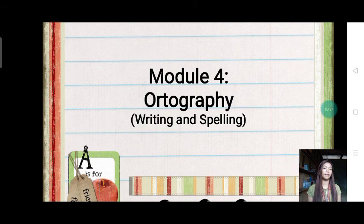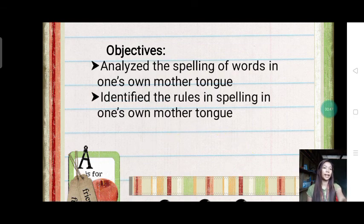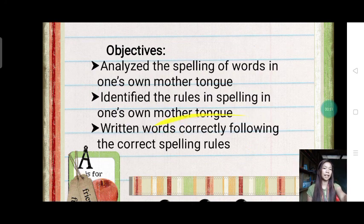Now I have here the objectives and learning outcomes. First is analyze the spelling of words in one's own mother tongue. Identify the rules in spelling in one's own mother tongue. And the last is write words correctly following the correct spelling rules. Now let's go to our topic.